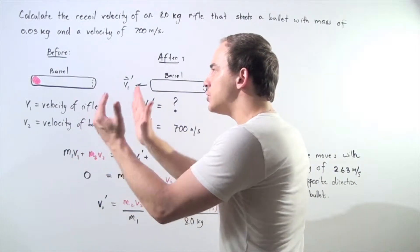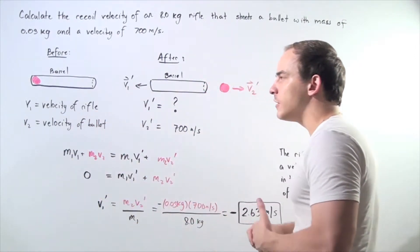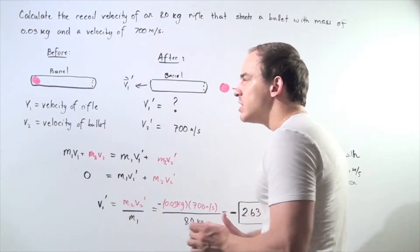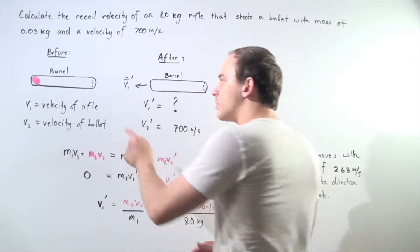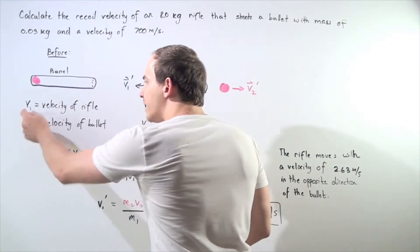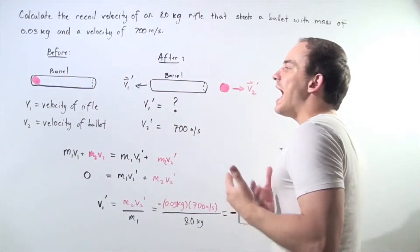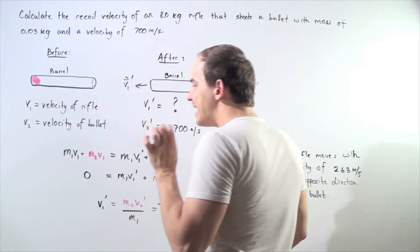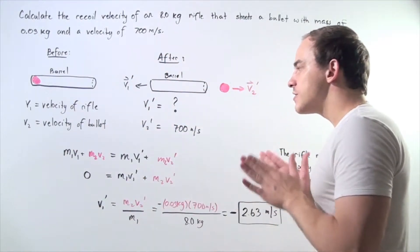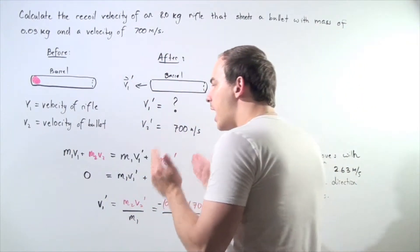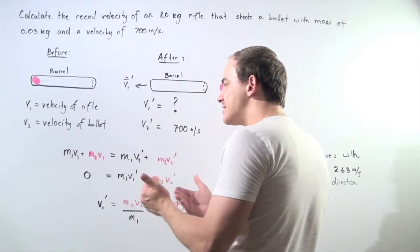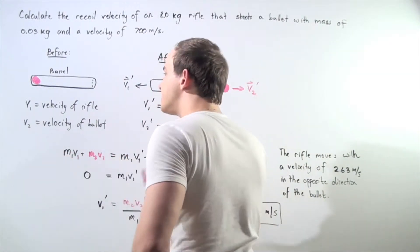Before we actually shoot the bullet with the rifle, both the bullet and the rifle are stationary. So our initial velocity of the rifle and barrel V1 is 0 meters per second and the initial velocity of the bullet V2 is also 0. That means if we sum up the momentum of the rifle, barrel, and bullet system, the sum will give us 0.